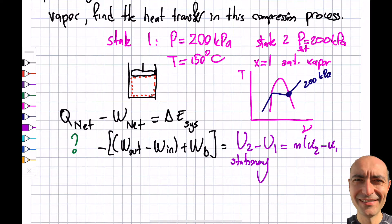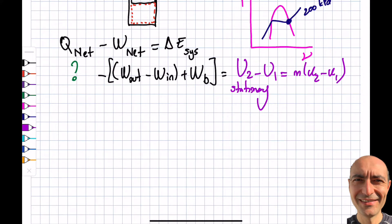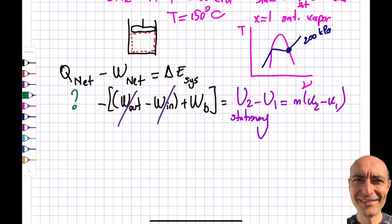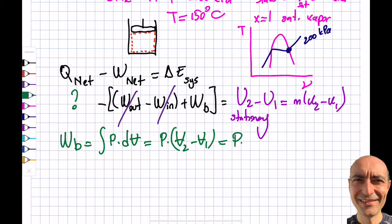We need specific internal energies from the tables. Looking at the work terms: there's no turbine providing W_out and no propeller providing W_in. The only work is boundary work W_b, which equals the integral of P dV. For an isobaric process, W_b = P times (V2 minus V1), or P times m times (v2 minus v1).